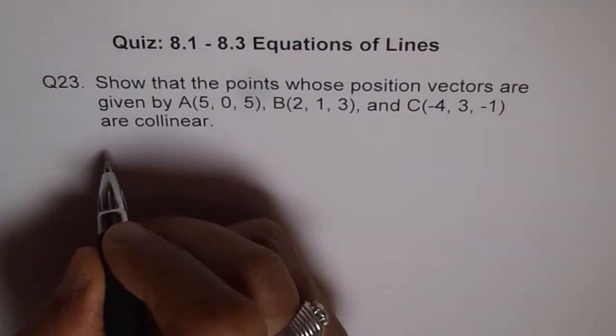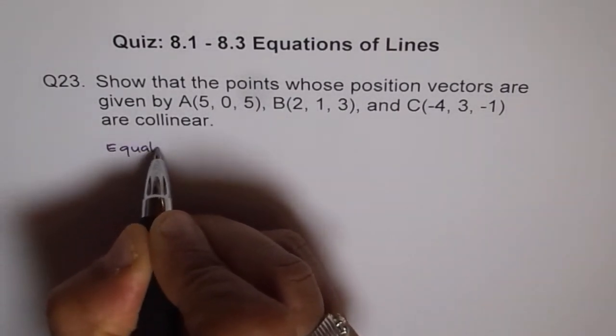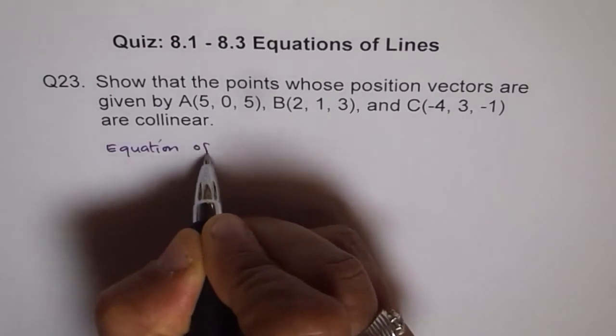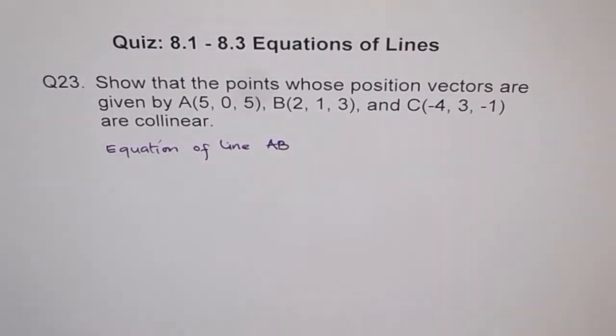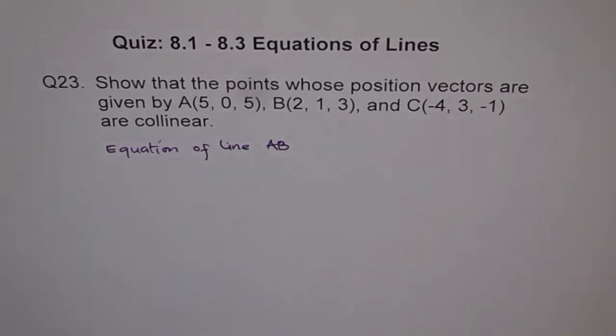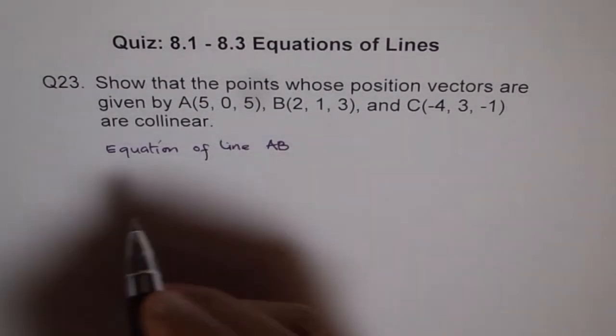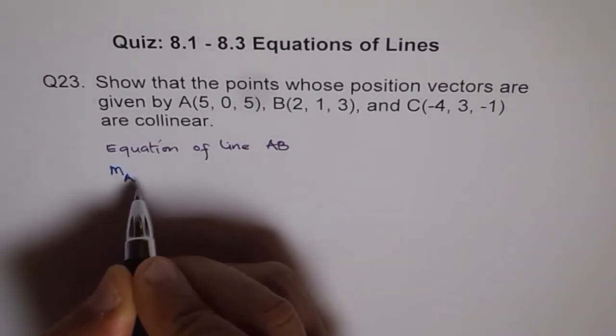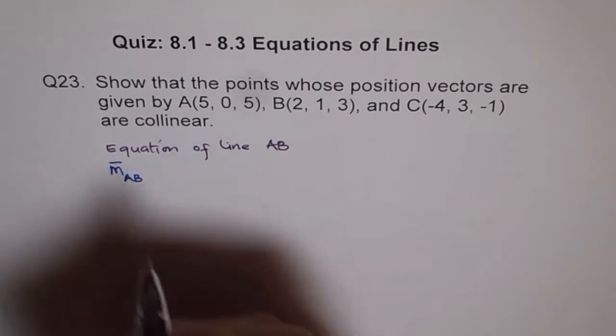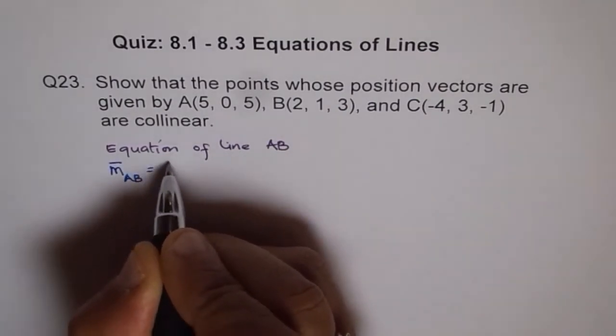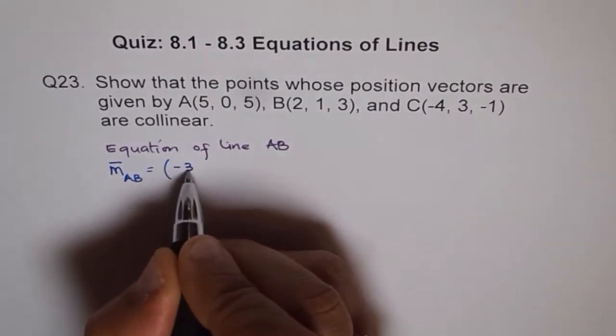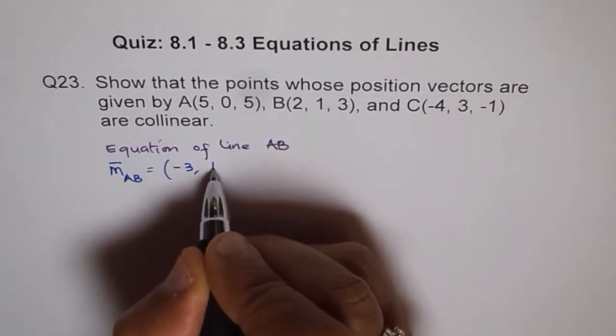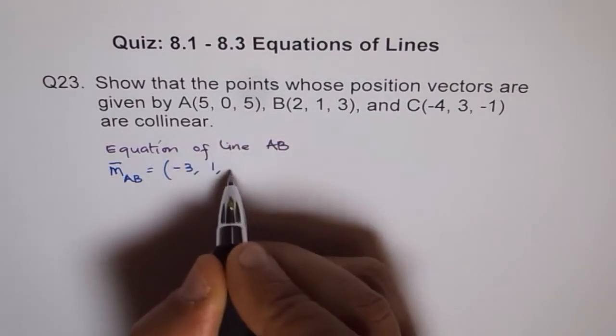We say, what is the equation of line? We'll get equation of line AB. So that is the first part for us. Let's find equation of line AB. To find equation of line AB, first let's find slope or I should say direction vector AB. Which is equals to 2 minus 5 is minus 3, 1 minus 0 is 1, and 3 minus 5 is minus 2.